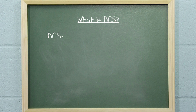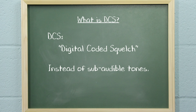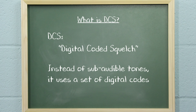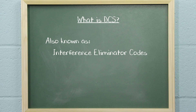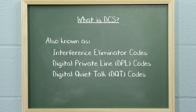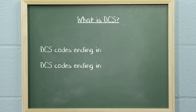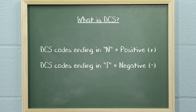DCS is an acronym for Digital Coded Squelch. Instead of subaudible tones, it uses a set of digital codes. DCS codes are also commonly known as Interference Eliminator Codes, Digital Private Line Codes, or Digital Quiet Talk Codes. DCS codes ending in N are positive. Negative DCS codes end in I.